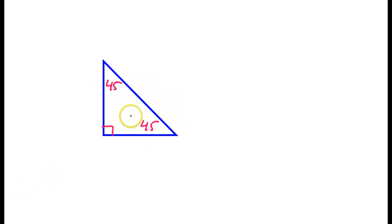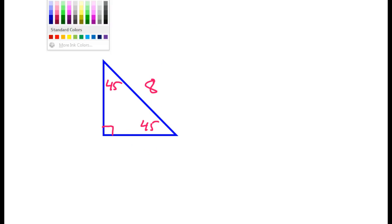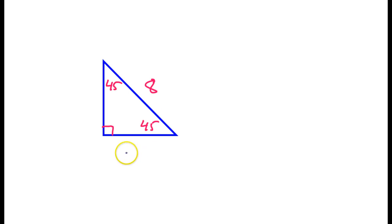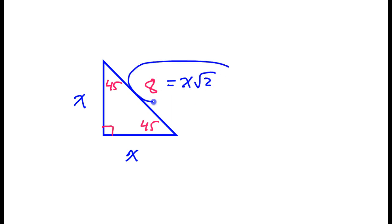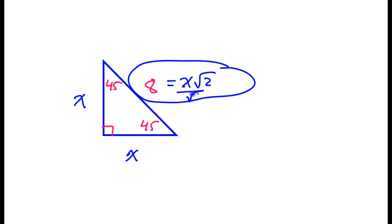The only thing that makes this slightly tricky is when they give us the hypotenuse and it does not involve a radical 2 in it. For example, say if they told us that the hypotenuse was 8 and we're supposed to find the legs. Using the pattern, it goes leg, leg, and then leg radical 2. So make an equation out of it using the value you're given. If you solve this for x, that would mean dividing both sides by radical 2.